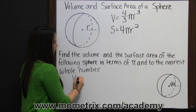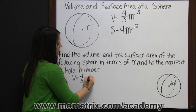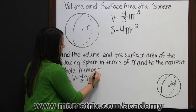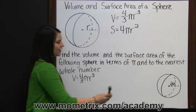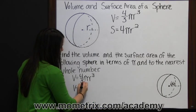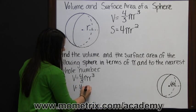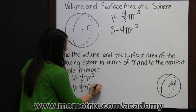First we'll write our formula for volume, which is four-thirds times pi times radius cubed. Then we'll substitute our radius, which is given here as six feet. Volume is four-thirds times pi times six feet cubed.